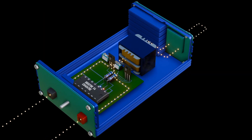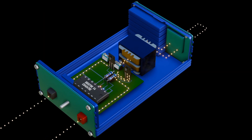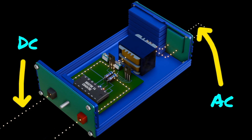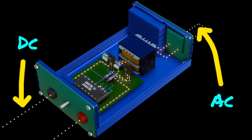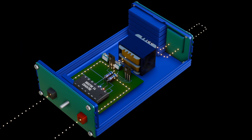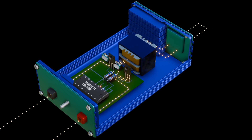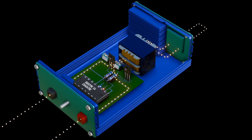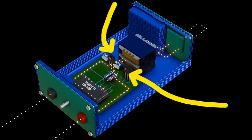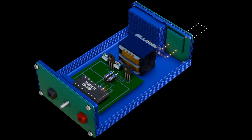An inverter converts DC current to AC current by switching the direction of a DC current several times per second. For example, in this circuit we use the IGBT to switch the DC current on and off. When one transistor is off, the other one is on.